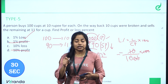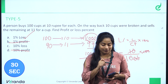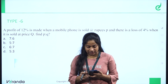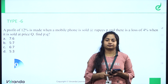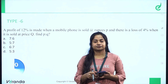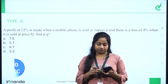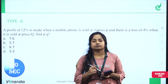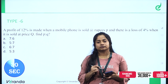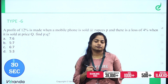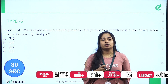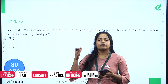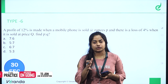This is the first answer — 1% loss. Now we have a similar type of question. A profit of 12% is made when a mobile phone is sold at rupees P, and there is a loss of 4% when it is sold at price Q. Find P is to Q.